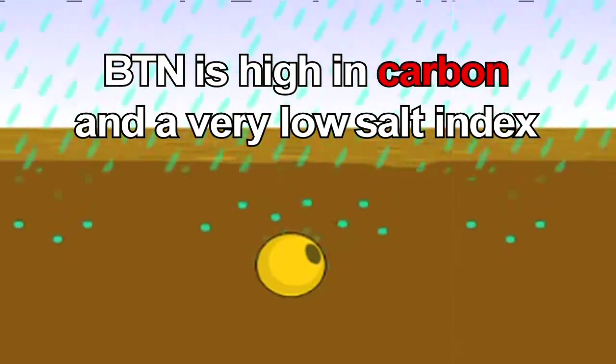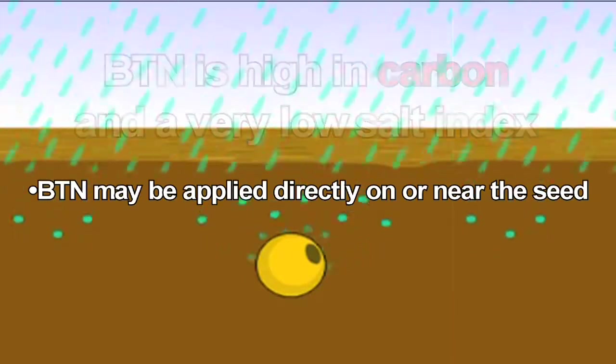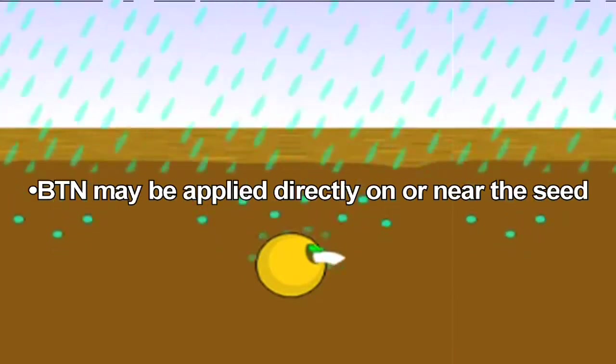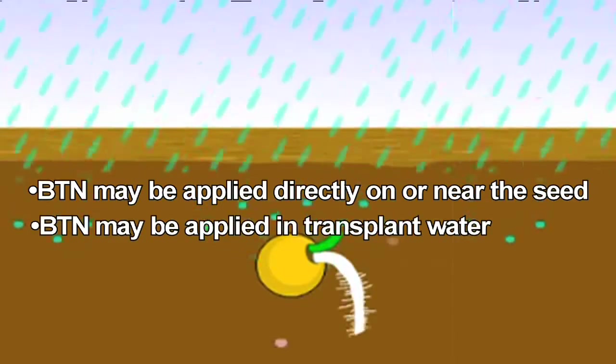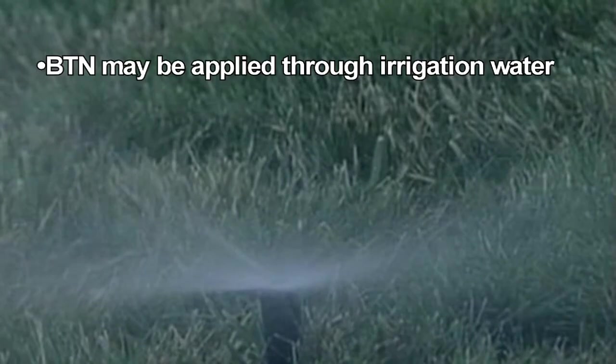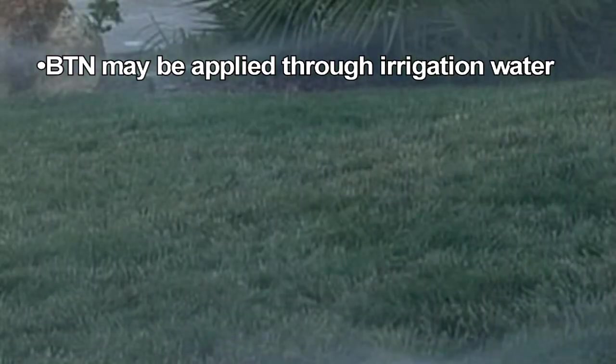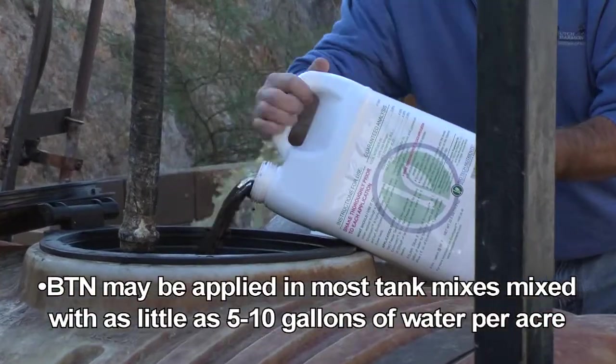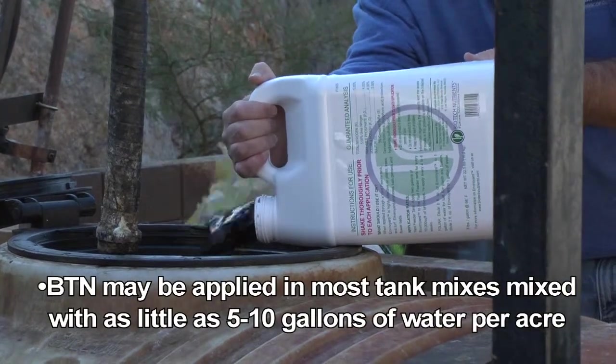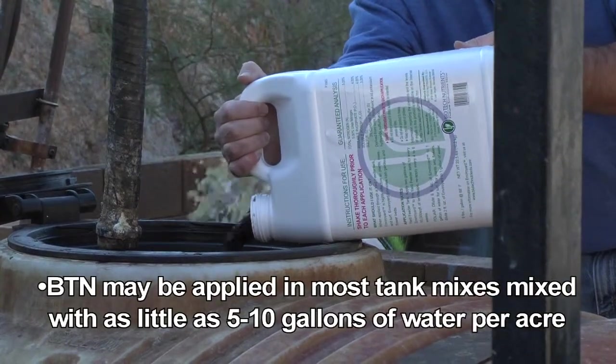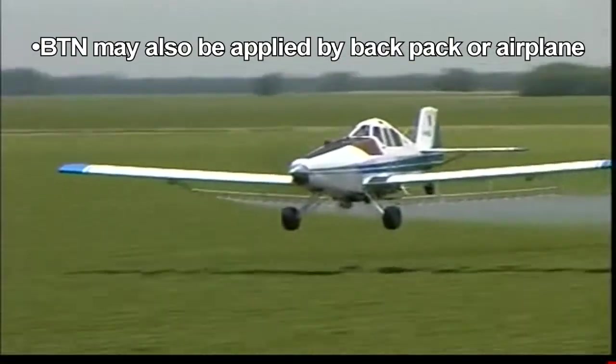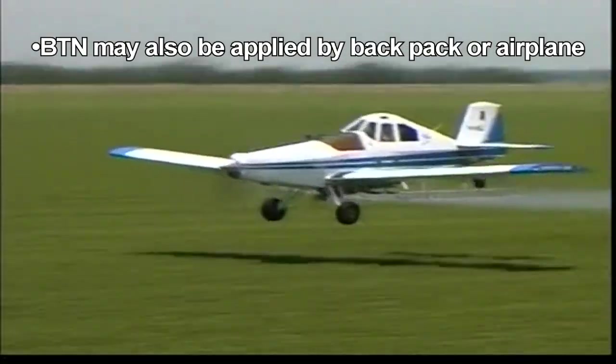Because BTN has a low-salt index, it can be applied close or directly onto the seed. BTN may be applied in transplant water, through irrigation water, in most tank mixes with as little as 5 to 10 gallons of water per acre, and may also be applied by backpack or airplane.